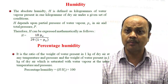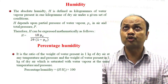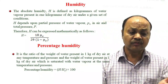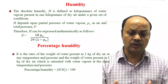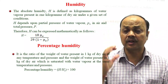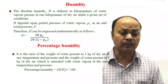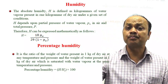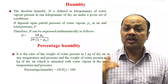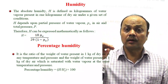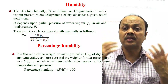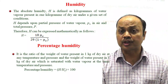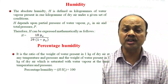Humidity is the amount of water vapor per kg of dry air. Knowing the water vapor pressure in the room at a given temperature allows calculation of humidity. Percentage humidity means the ratio of actual humidity to saturated humidity at a particular temperature — it is h divided by h-s, that is actual humidity divided by humidity at saturated condition.